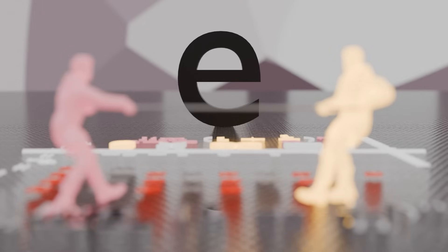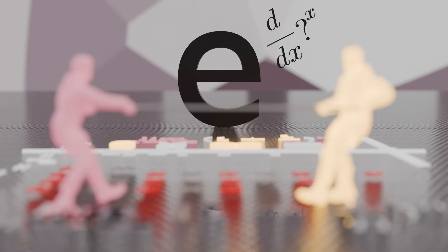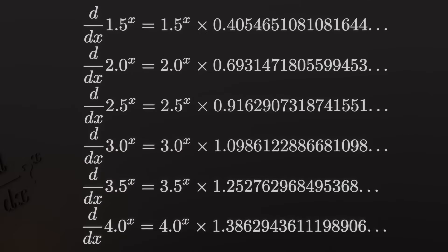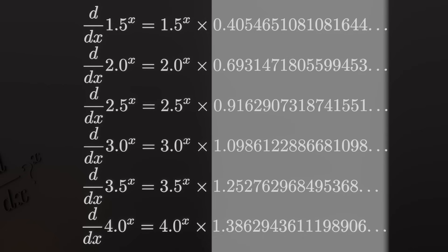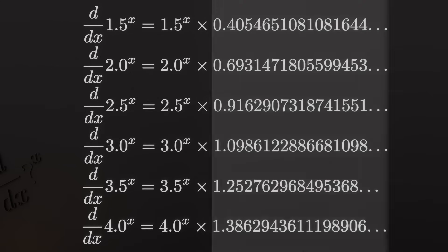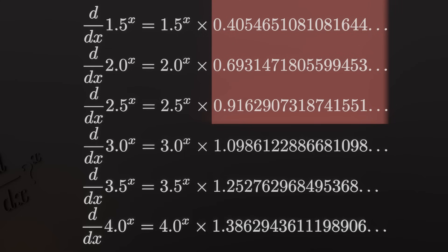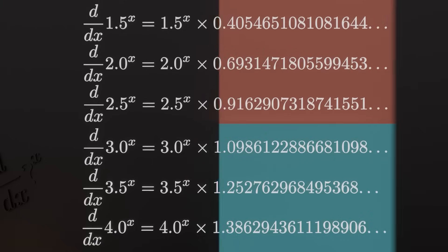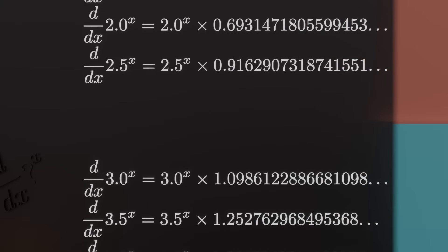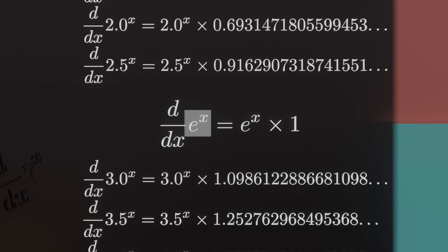You can think of e as the exponents' constant — like the operation of exponentiation boiled down into a number. The best way to represent that is with the derivative. What's the derivative of an exponential? It depends on what you're exponentiating. Here you can see a table of different exponential bases — it's always itself multiplied by a constant. But these constants are irrational. They start lower than 1 and then go above 1, so between 2.5 and 3 there should be some number for which the constant equals 1. That number is e, because e to the x is its own derivative — it doesn't need to be multiplied by a constant.